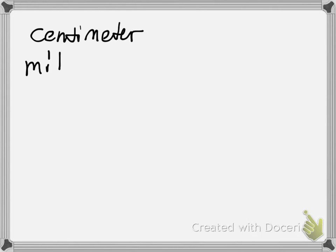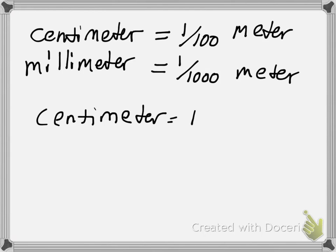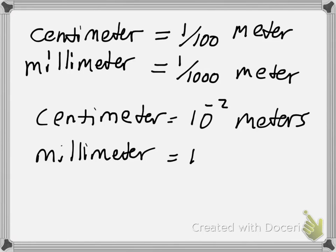Called the centimeter and the millimeter. And the centimeter is one one-hundredth of a meter, and the millimeter is one one-thousandth of a meter. So a centimeter is equal to 10 to the negative two meters, and a millimeter is equal to 10 to the negative three meters.